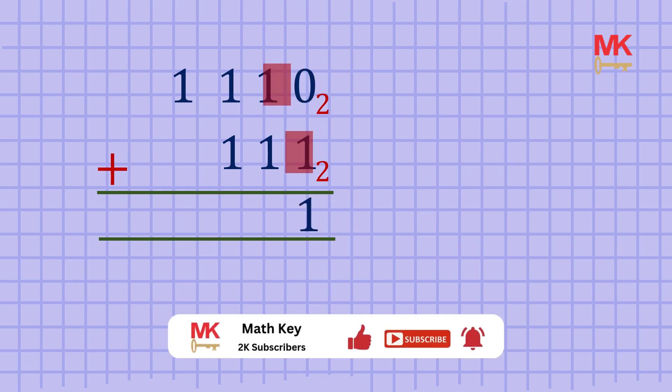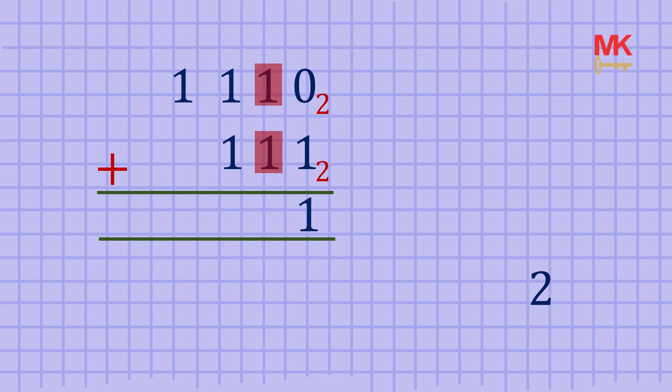Next, one plus one is two. Two is not allowed in base 2. So, what do we do? And that's the question. Since we are adding in base 2, we divide this sum by the base which now gives one remainder zero. We keep the remainder and carry the quotient to the next addition.